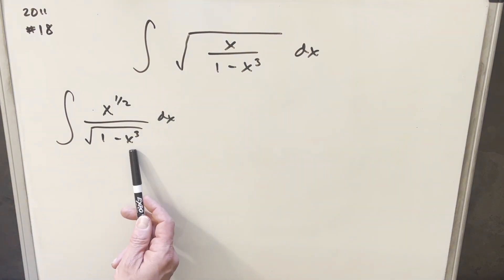And then here, this x cubed is still kind of bothering me. I can't really do, if I do a u substitution here, right, let's say if I make 1 minus x cubed my u, we take the derivative, we get 3x squared. That's not really great.